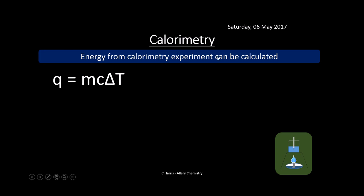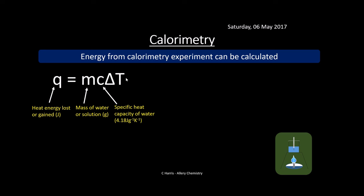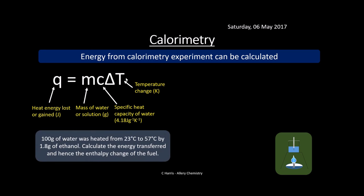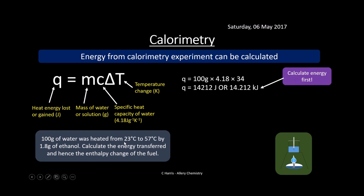Energy from a calorimetry experiment — we can calculate this using Q = mcΔT. Q is energy gained or lost, in joules. M is the mass of water or the solution that we're heating. C is the specific heat capacity, given as 4.18. And ΔT is the temperature change, measured in Kelvin. Here's an example: 100 grams of water is heated from 23°C to 57°C by 1.8 grams of ethanol. Q equals 100 × 4.18 × 34 — the temperature change is 34.